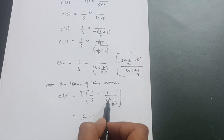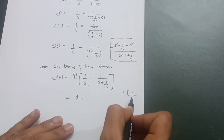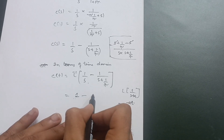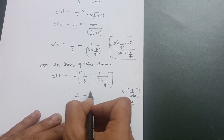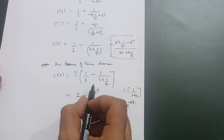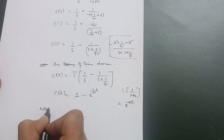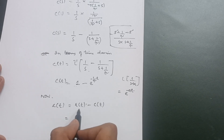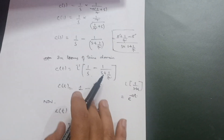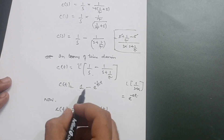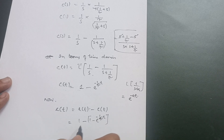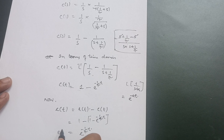Therefore, C(T) = 1 − e^(−T/τ). This is the step response of the first order system. Now to calculate the error: error E(T) = R(T) − C(T) = 1 − (1 − e^(−T/τ)). The 1s cancel to give E(T) = e^(−T/τ). This completes the derivation.